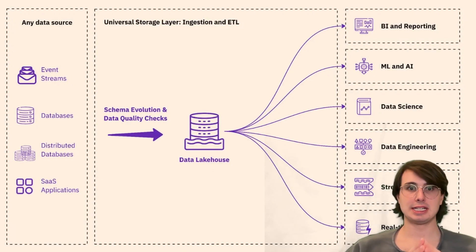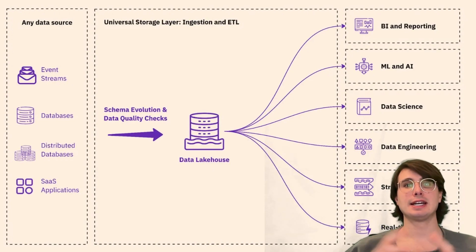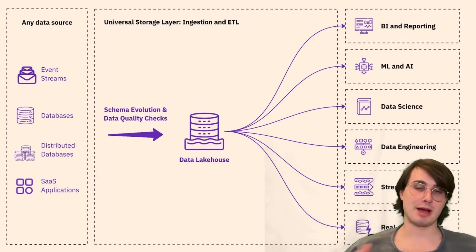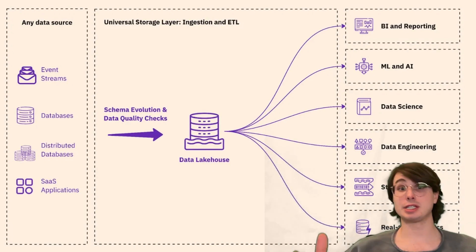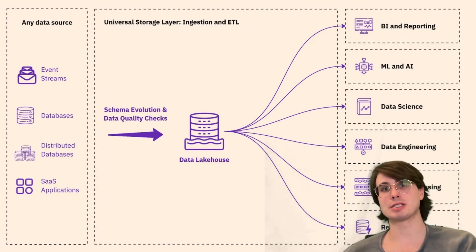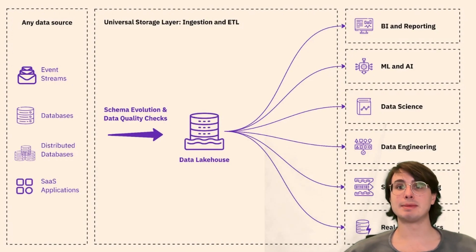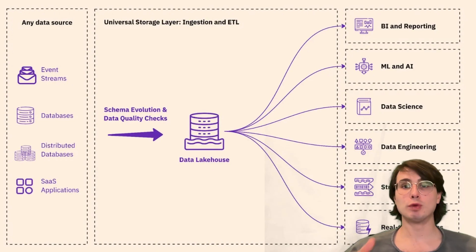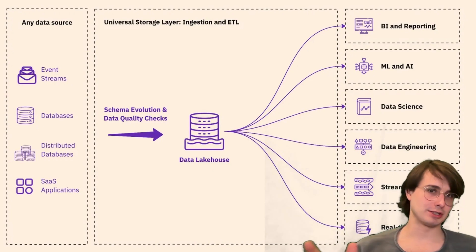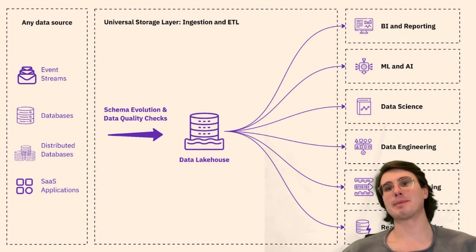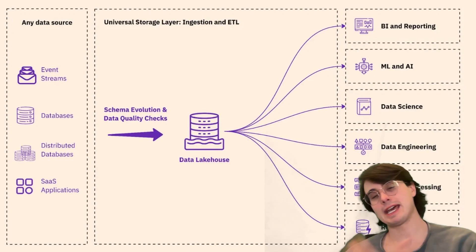Schema evolution is crucial for streaming pipelines, especially when dealing with semi-structured or unstructured data. Use backwards and forward compatible schemas to allow changes without breaking the producer-consumer relationship. Version your events by tracking schema versions in metadata, and in conjunction with checkpointing, create checkpoints for schema version changes so you can roll back if there's a breaking change. When evolving schemas, favor adding new fields over removing or changing existing fields to preserve historical data — though this is very much use-case dependent.